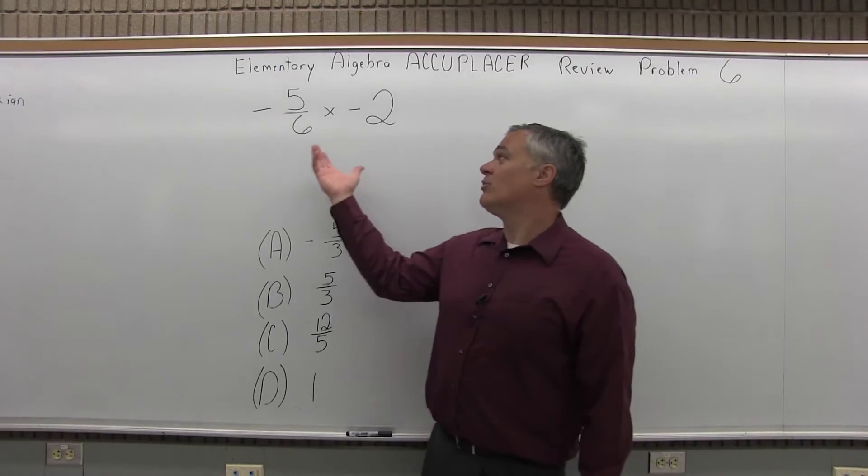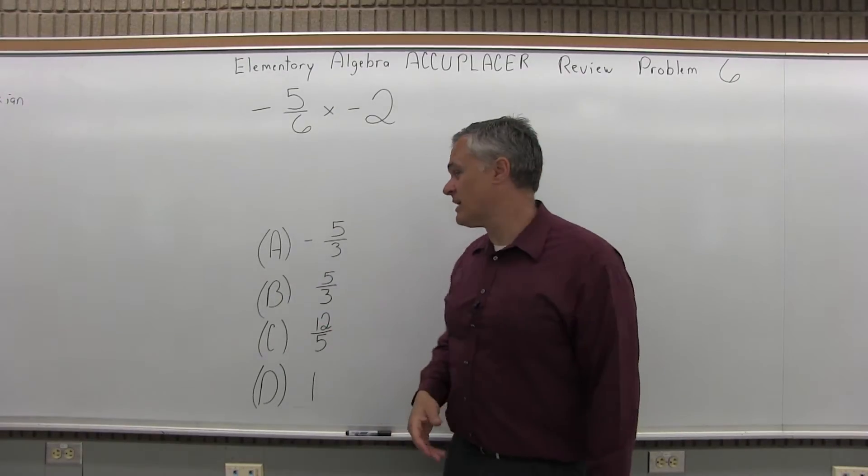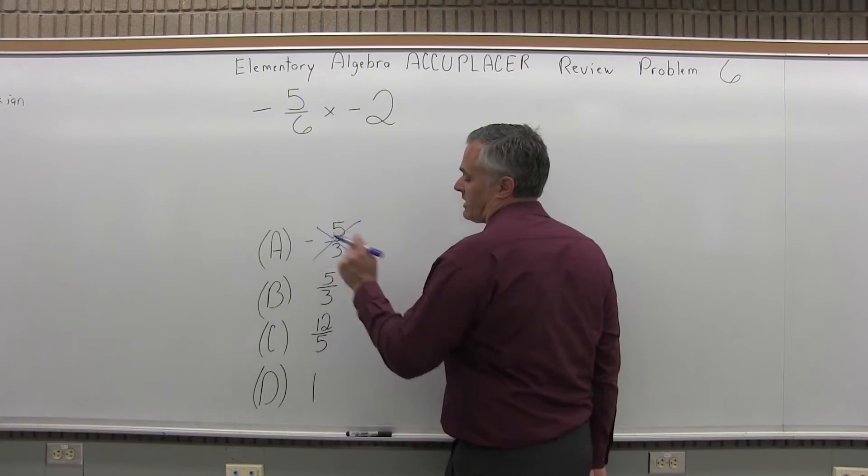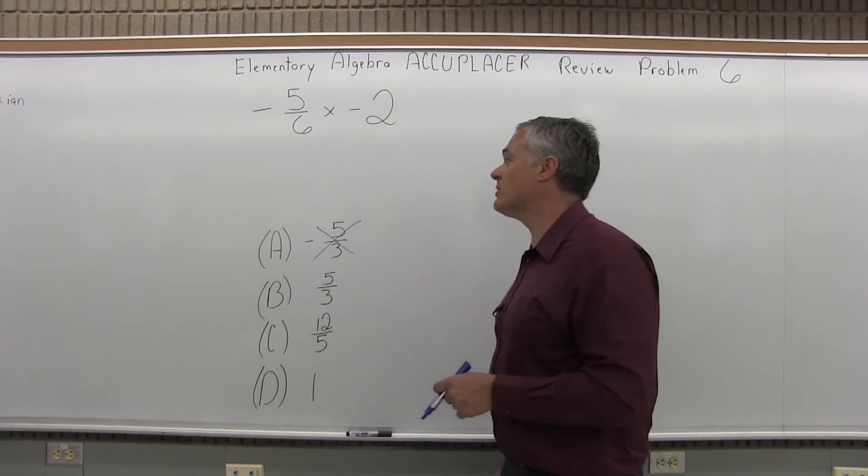So right off the bat, we have a negative times a negative. I know those negatives should cancel. The answer will have to be positive. So option A is a negative value. I know it can't be option A. So I'm down to 3. It always helps if you can eliminate one pretty quickly.